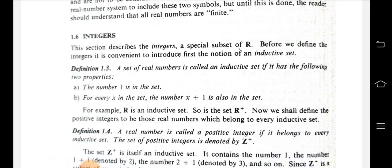Definition 1.3: A set of real numbers is called an inductive set if it has the following two properties: Property 1 — the number 1 is in the set. Property 2 — for every x in the set, the number x plus 1 is also in the set.